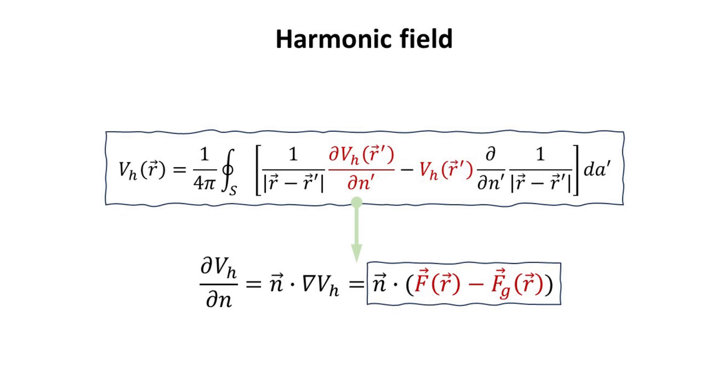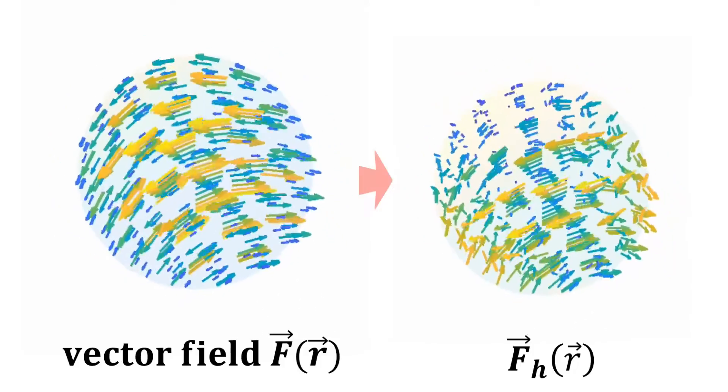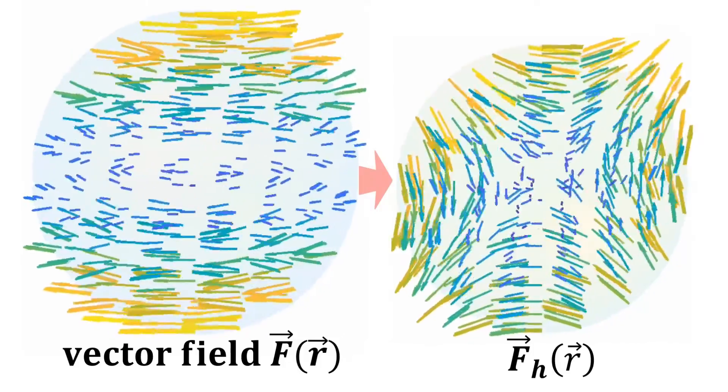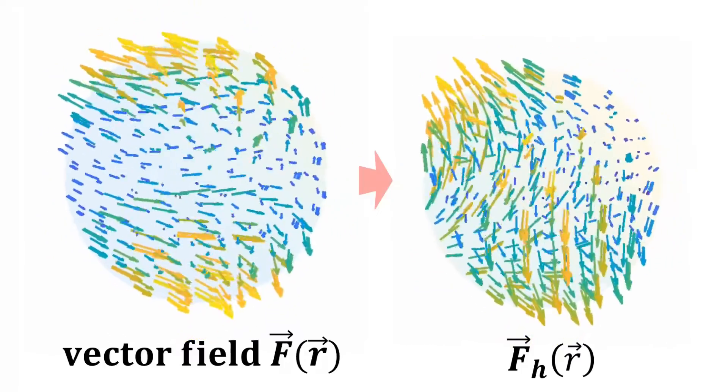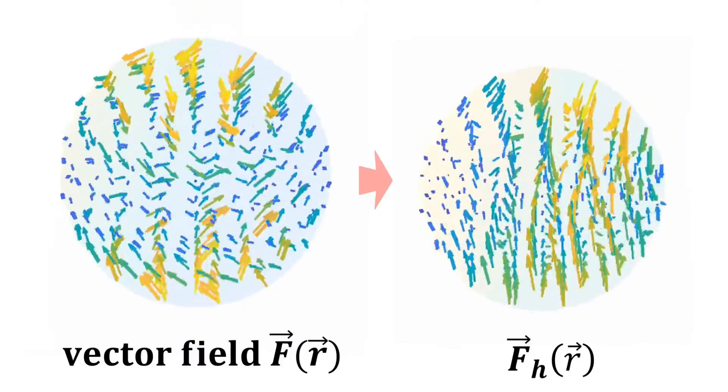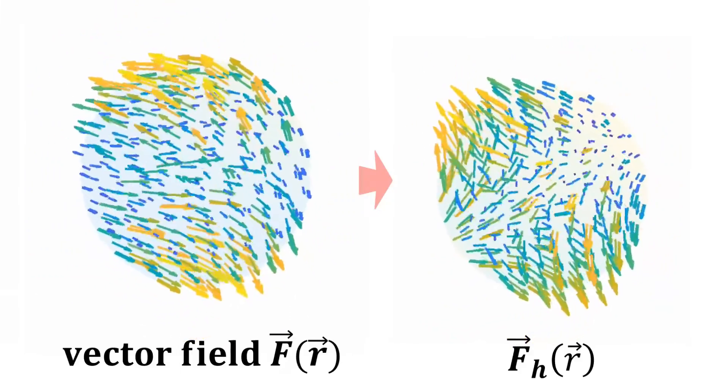More explicitly, we require the normal derivative of V_H to be equal to the normal component of the field F minus F_G. With this one can arrive at the harmonic constituent of the field as shown. Notice how the fields are entering normally into the sphere along one direction, and escaping out of the sphere in another direction. This is analogous to the fields of the saddle point we seen in last chapter.